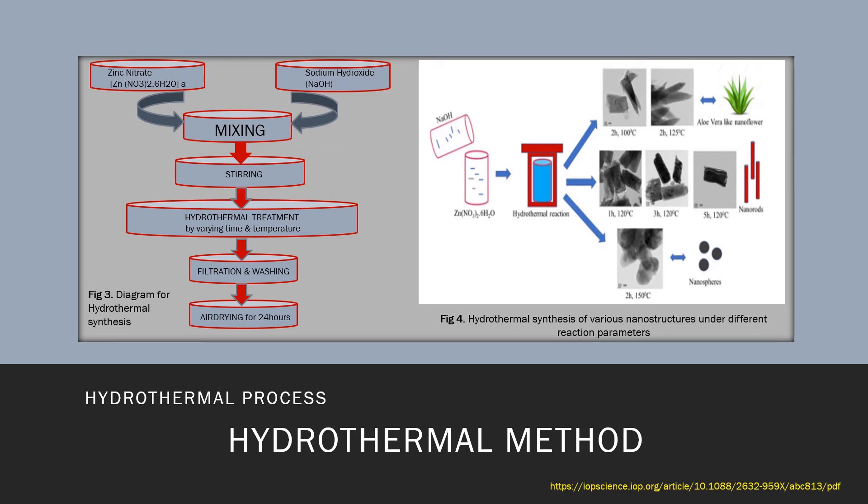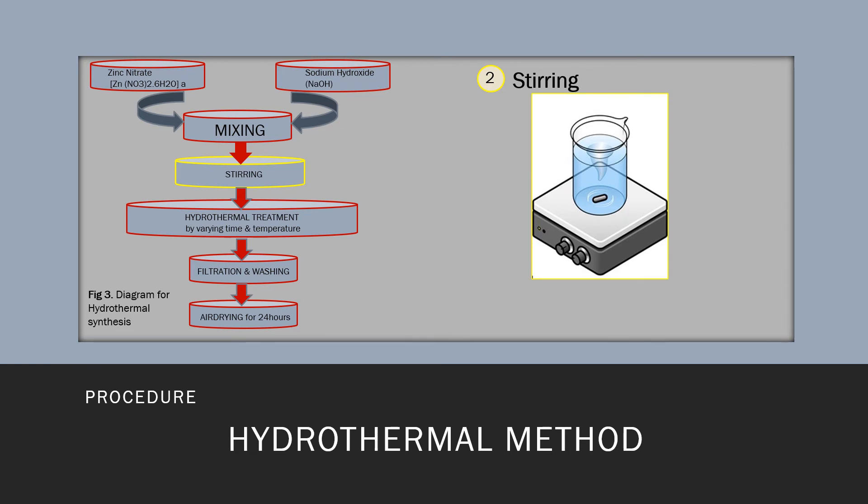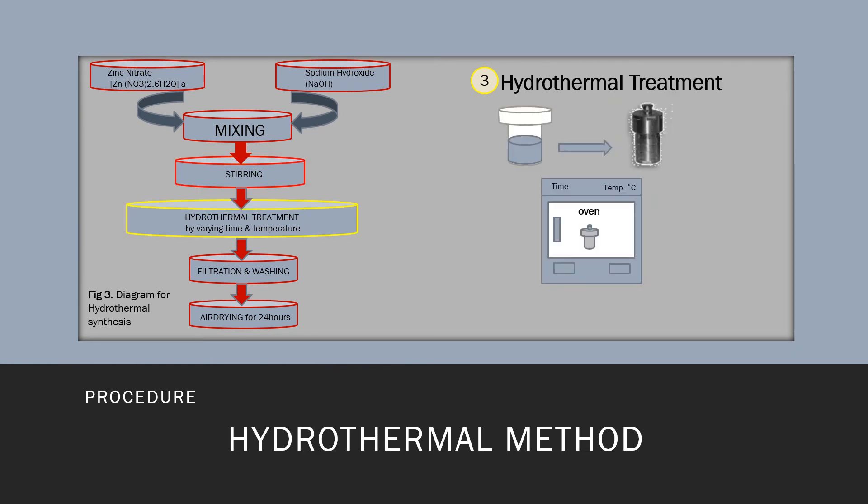Let us do the step-by-step process. Step one, mixing. In the hydrothermal process, we mix the precursor and capping agent into a solvent that enables the synthesis of crystalline nanostructures with the appropriate ratio. Step two, stirring. We stir well the solution using a magnetic stir machine. Step three, hydrothermal treatment. Here the procedure includes the transfer of the mixture into a sealed autoclave made of stainless steel lined with teflon and heated in an oven at a specific temperature and time.